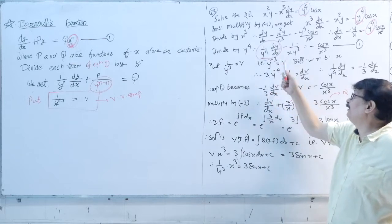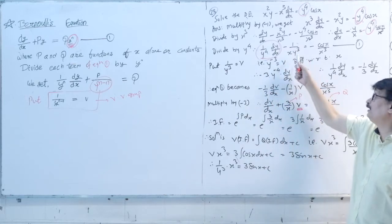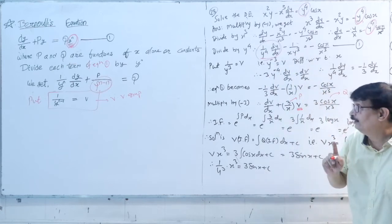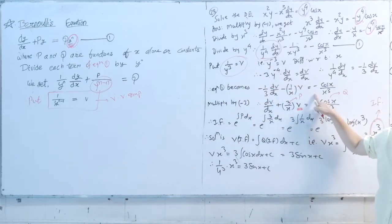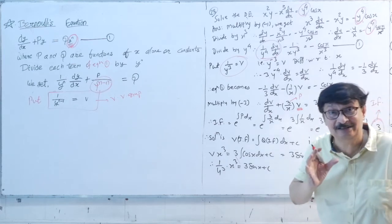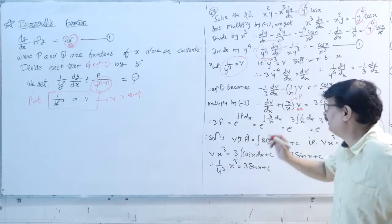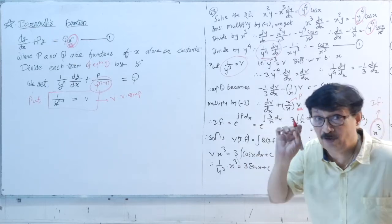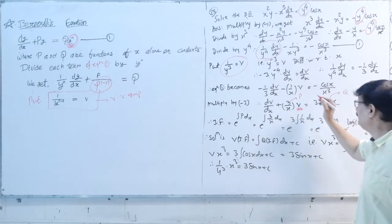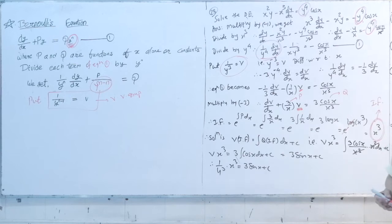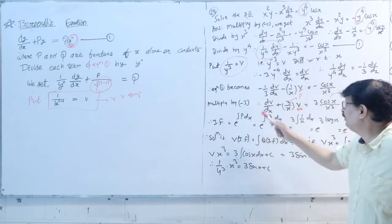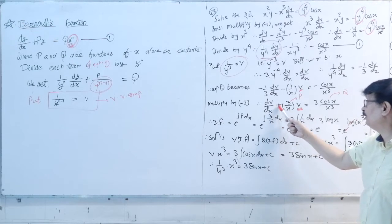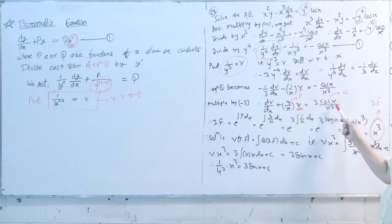Substituting, where 1/y³ = v: we get −(1/3)·(dv/dx) − (1/x)·v = −cos(x)/x³. Multiplying through by −3 and rearranging to get it into standard linear form: dv/dx + (3/x)·v = 3cos(x)/x³.